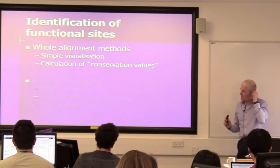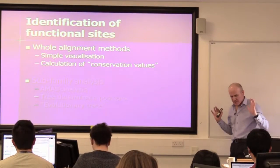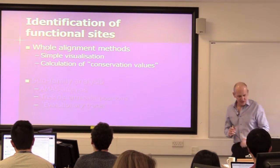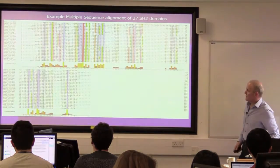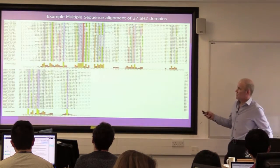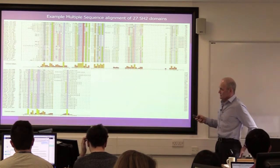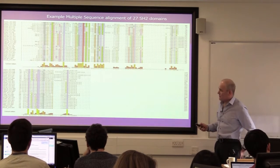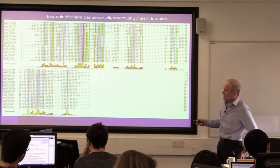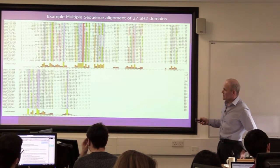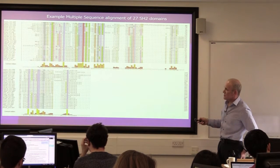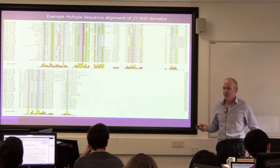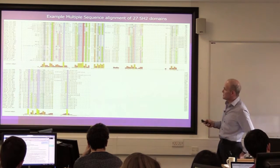Protein subfamily analysis. I'm going to talk about finding functional sites from protein multiple alignments. You've done a little bit of this before - you take a multiple sequence alignment, calculate conservation on the columns. You can look at this histogram underneath and see positions that have conserved physicochemical properties, which might tell you something about how important those positions are.